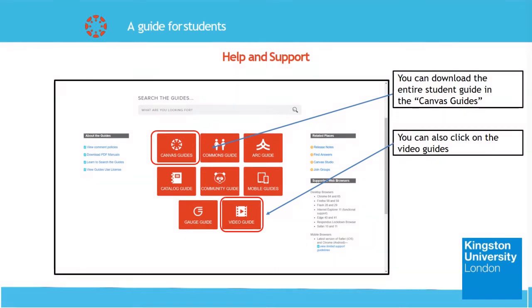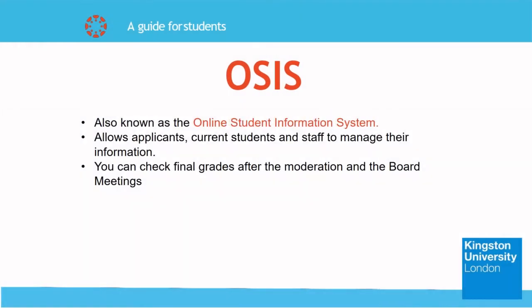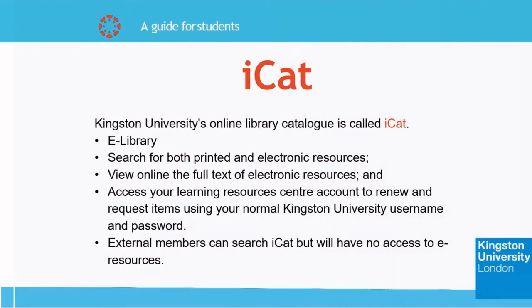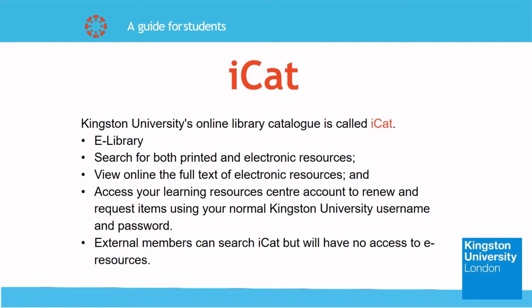Next up we have OSIS, also known as the Online Student Information System. It allows applicants, current students and staff to manage their information. You can check your final grades after the moderation board meetings. Kingston's online library catalog is called iCAD. It is an electronic library where you can search for both printed and electronic resources. From here you can view the online full text of electronic resources and access your Learning Resource Centre account to renew and request items using your normal Kingston University username and password. External members can search iCAD but will have no access to e-resources.